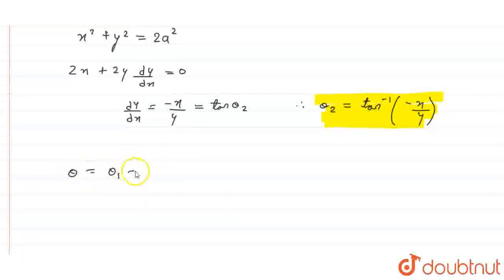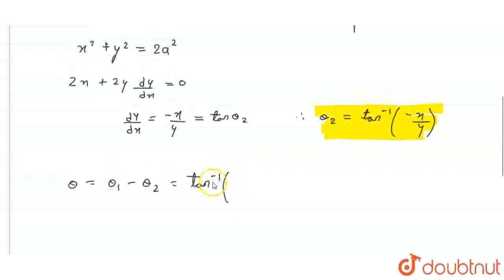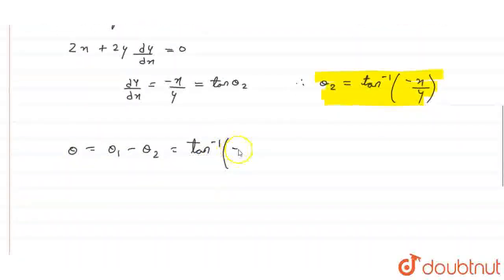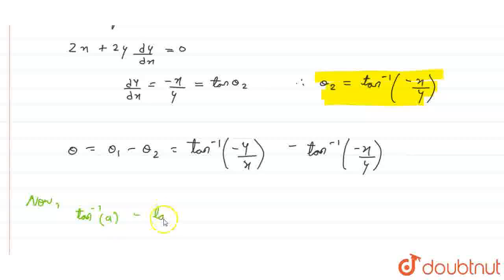Now, the final step is to subtract theta1 and theta2. Theta equals theta1 minus theta2. So, theta1 is tan inverse of minus y by x and theta2 is tan inverse of minus x by y. Here we know the property that tan inverse of a minus tan inverse of b equals tan inverse of a minus b upon 1 plus ab.